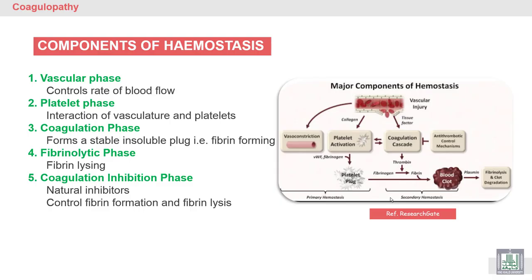The components of hemostasis — we mean the steps. We discussed three steps before: a vascular phase or vasoconstriction, which is the reaction of the blood vessel to decrease the loss of blood; the platelet phase, which is the formation of a platelet plug and the interaction between the blood vessel and the platelet to close the blood vessel. The primary closure by the platelet is not enough, so we need a coagulation phase to form a stable, insoluble fibrin clot. The platelet plug is unstable and soluble, while the fibrin clot is stable and insoluble.